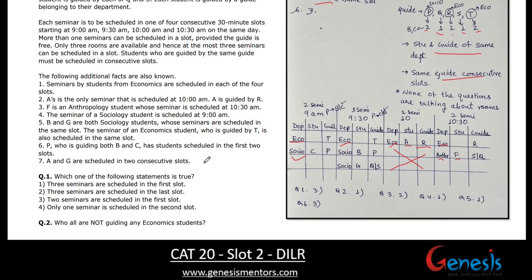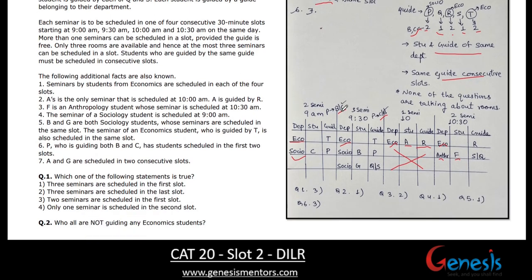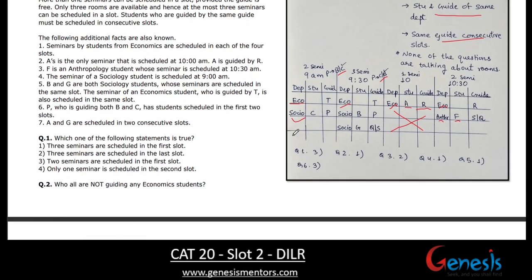P is guiding both B and C, and has students scheduled in the first two slots. So P appears in both slot 1 and slot 2, guiding B and C — though which student is in which slot we don't know yet. Since B is a sociology student, we can conclude that P is also a sociology guide.